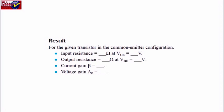Result: For the given transistor in a common emitter configuration, input resistance is [value] at VCE equal to [value], output resistance is [value] at VBE equal to [value], current gain beta is equal to [value], and voltage gain AV is equal to [value].